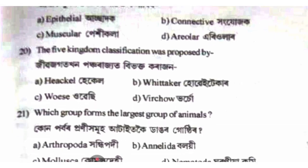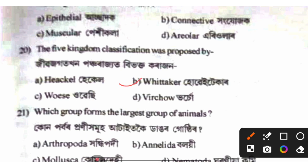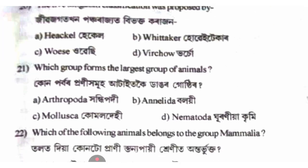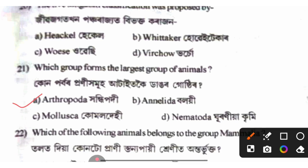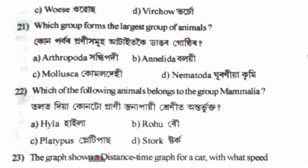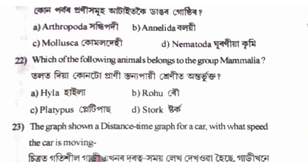Which animal is on top of the phylogenetic classification? The answer is platypus, option C.